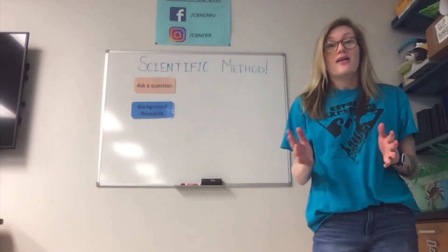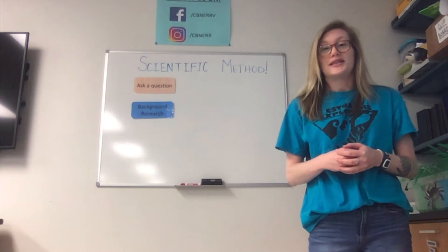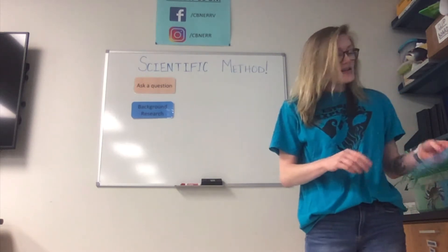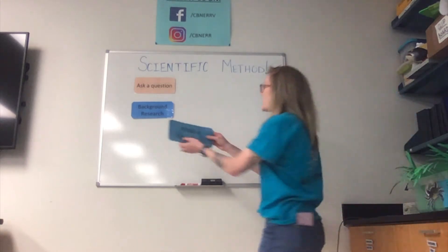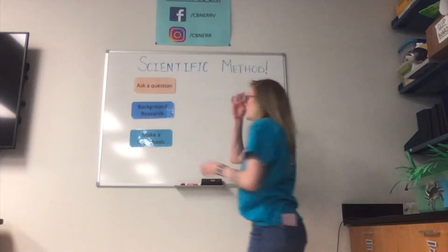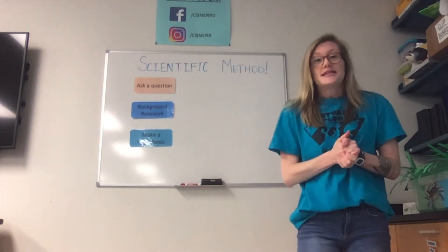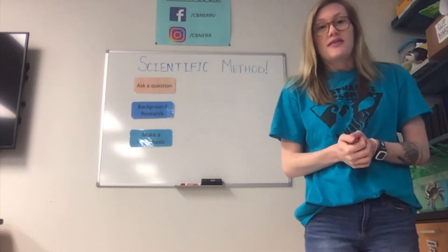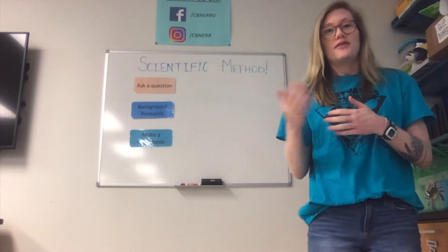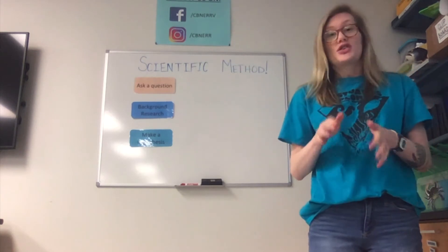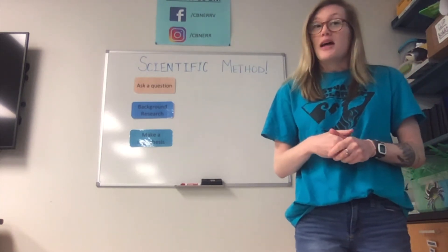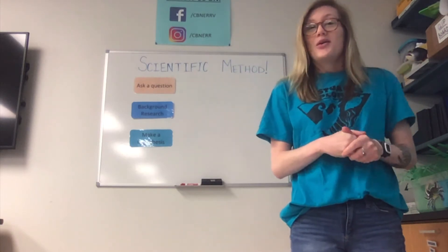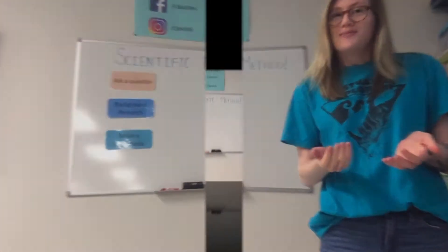Now that we've concluded all of our background information, we're going to move on to step number three and that is going to be making a hypothesis. We'll pop that up here. That hypothesis is that if-then statement that you form based on your previous knowledge that you've gathered. Once we finish our experiment and we gather all that data, we're going to either see if our hypothesis was correct or maybe it was proved wrong.